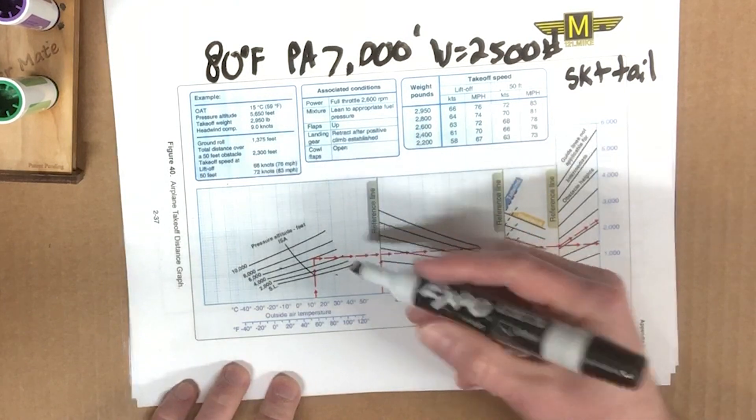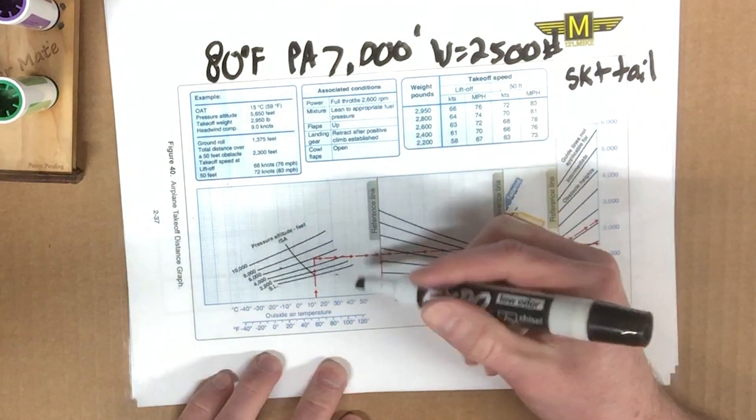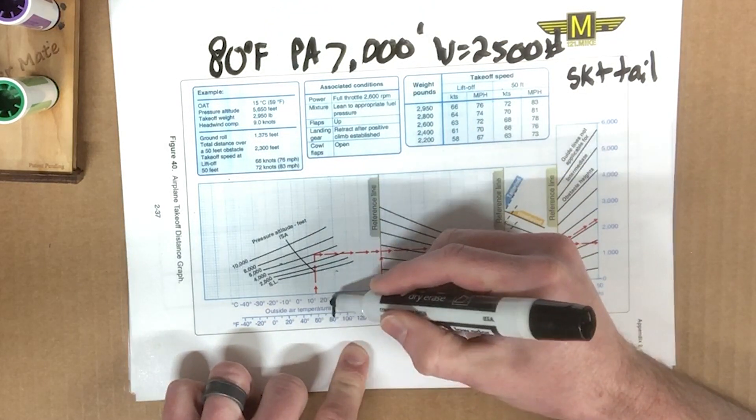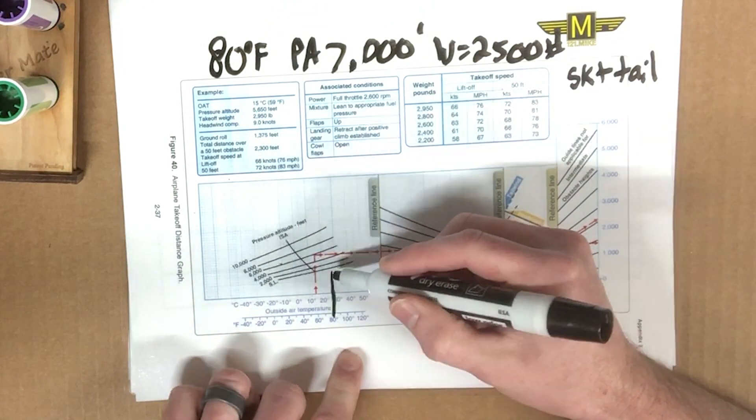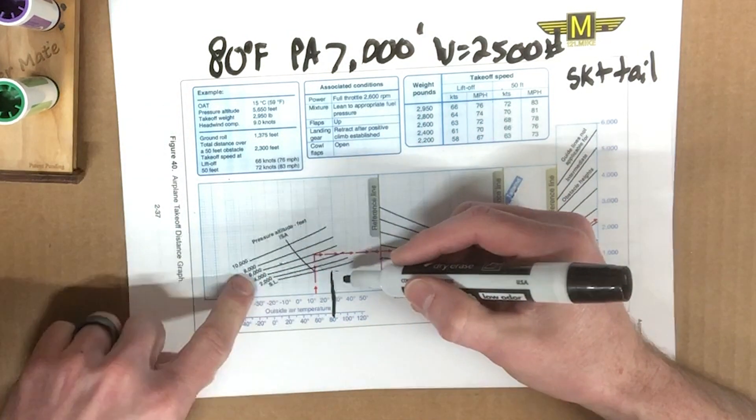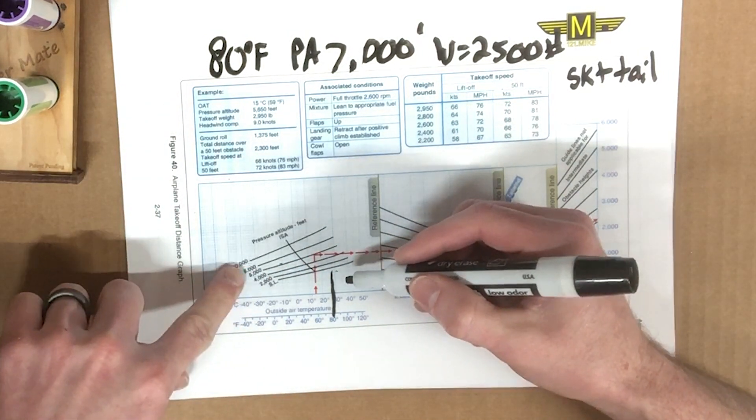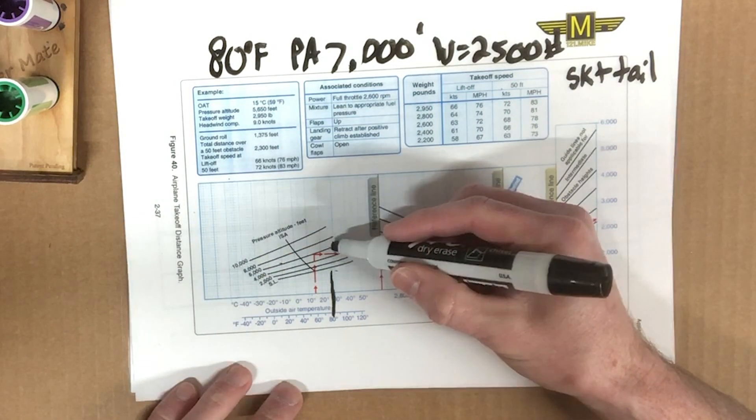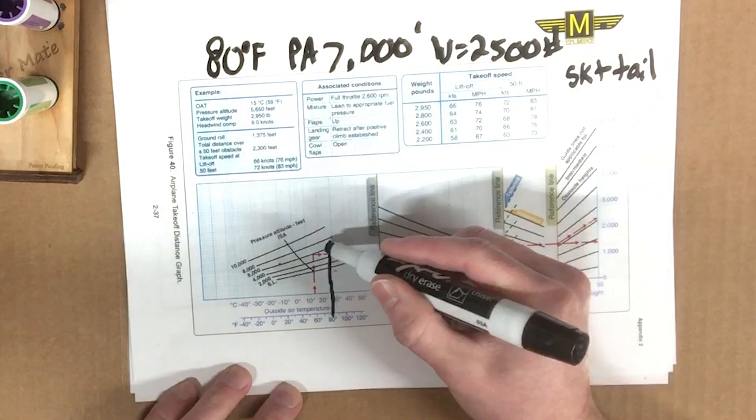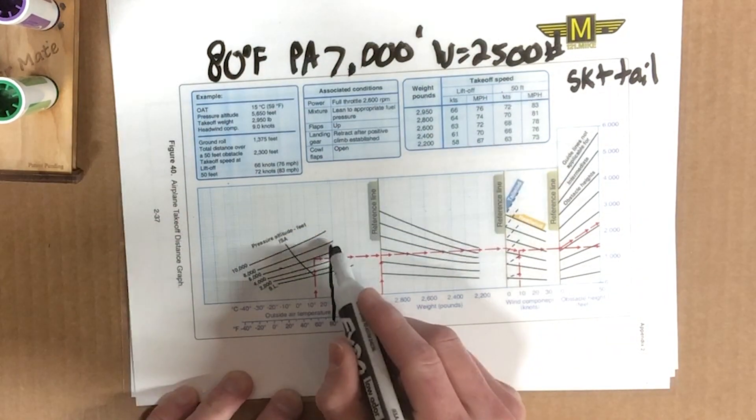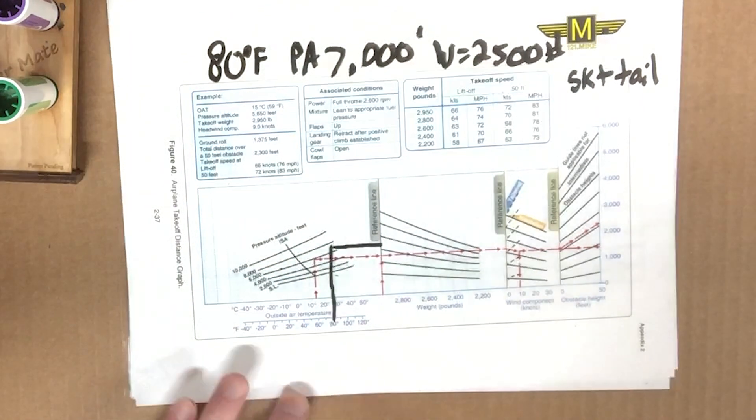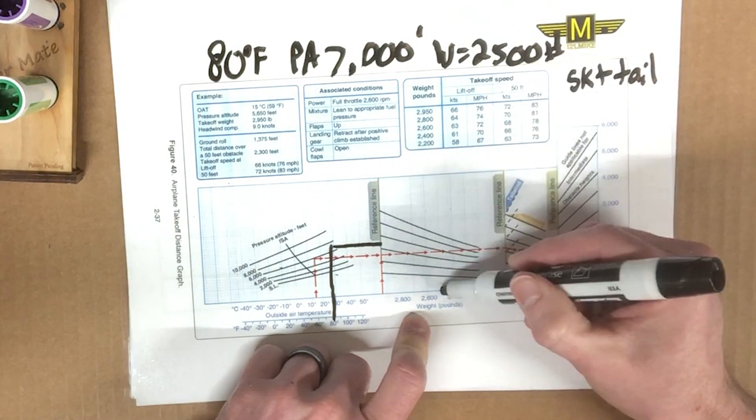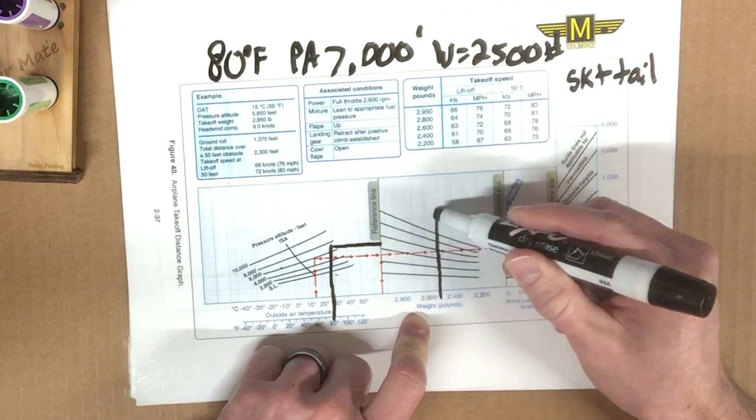Okay, here we go. So we have to use this bottom chart down here since we were given it in Fahrenheit. So we'll come up the 80 line until we intersect 7,000 pressure altitude. Well, we don't have a line for 7,000. So we need to interpolate between the 6,000 and the 8,000 line, which appears to be about there. Okay. Now we'll come out over to our reference line. Okay. Our weight given in this scenario is 2,500 pounds, which is this line right there.